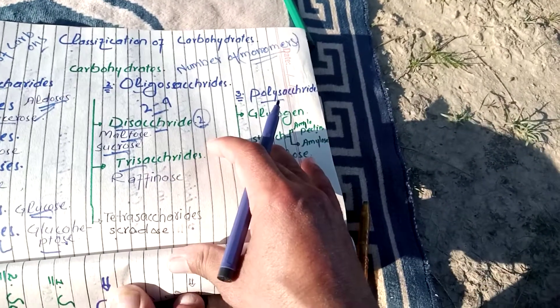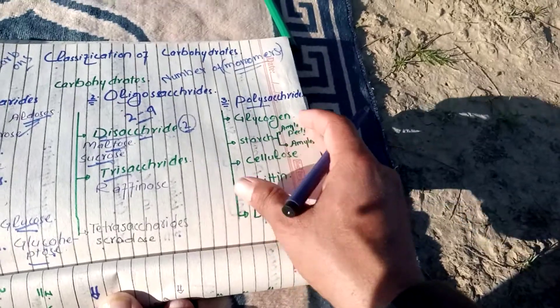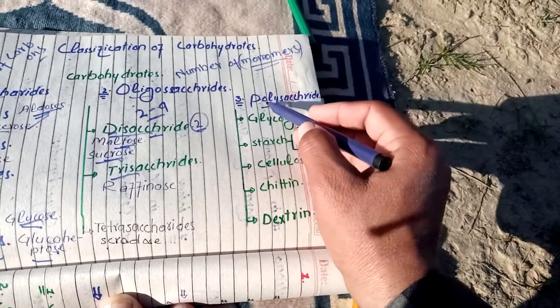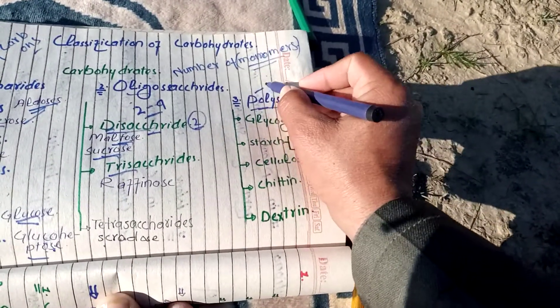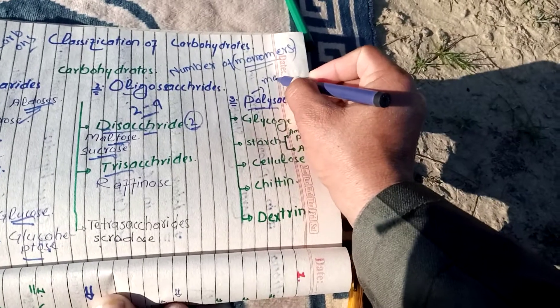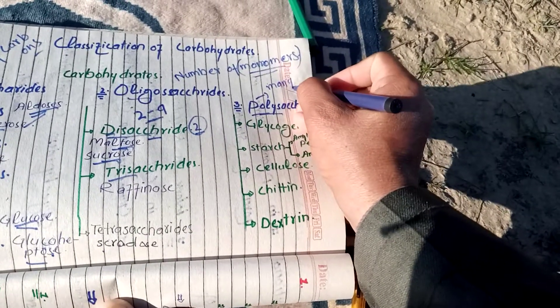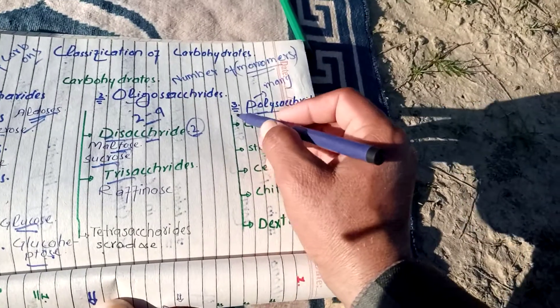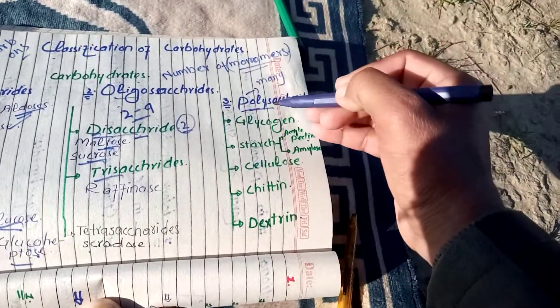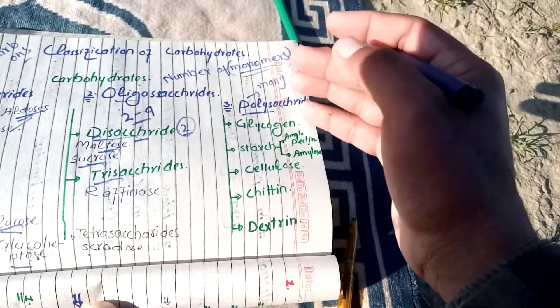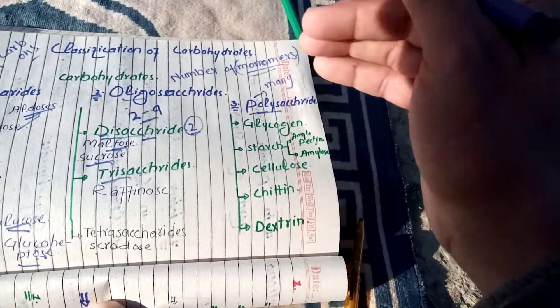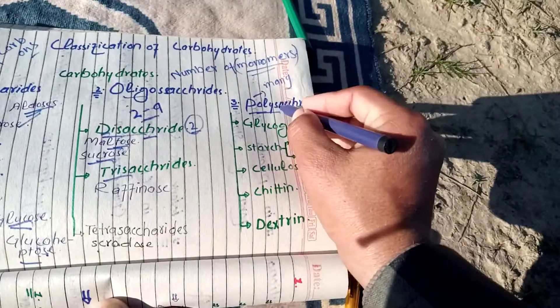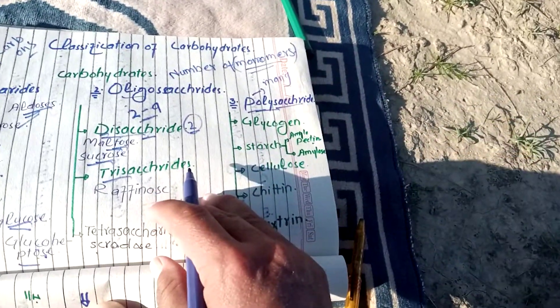Tetrasaccharide jis mein four mojood ho example hai stachyose. Stachyose mein four monosaccharide mojood hai.